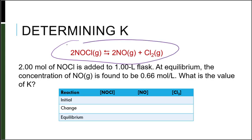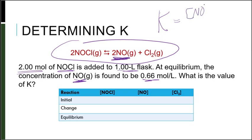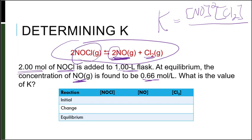Here we have a chemical reaction. We're told that we have 2 moles of NOCl added to a 1-liter flask. At equilibrium, the concentration of NO — one of the products — is found to be 0.66 moles per liter. What is the value of K? First, I'm going to write my K expression: K equals the concentration of products over reactants. So concentration of NO squared times concentration of Cl₂, divided by concentration of NOCl squared.